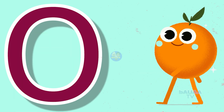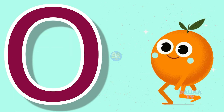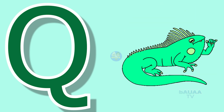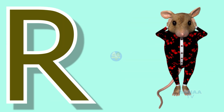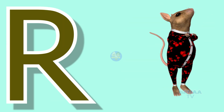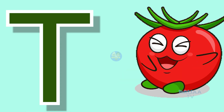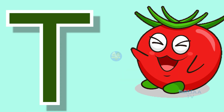O for orange, P for potato, Q for quill, R for rabbit, S for sheep, T for tomato.